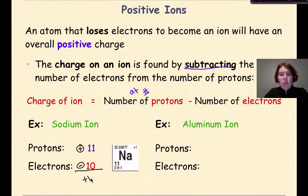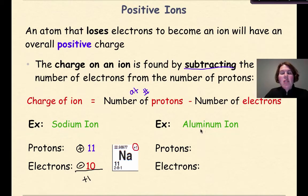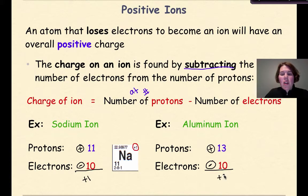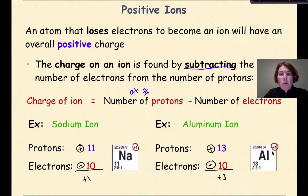And that makes sense, because if you look at your periodic table — here's the image of sodium from your periodic table — you'll notice that the only charge listed here for sodium is plus 1. Now let's look at an aluminum ion. The number of protons for aluminum is 13, and the number of electrons are 10. So protons are positive and electrons are negative. The difference between 13 and 10 gives a charge of plus 3. The only charge listed for aluminum is plus 3, so my results make sense.